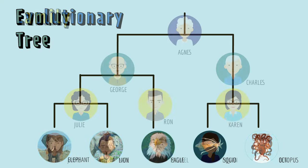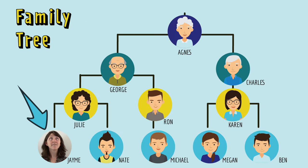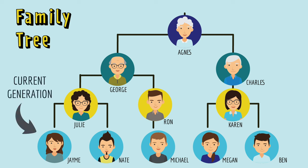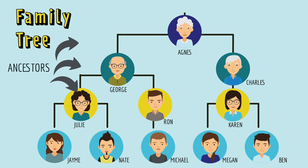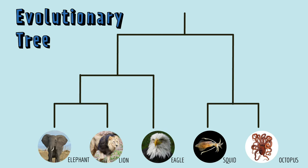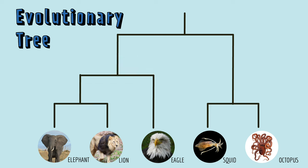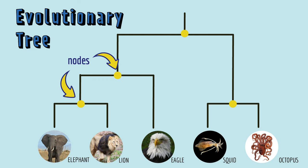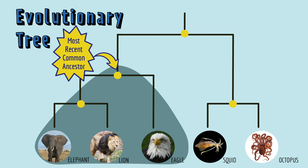An evolutionary tree is a lot like a family tree. The current generation is at the tips of the tree, down here. Ancestors are up here, farther away from the tips of the tree. One major difference between a family tree and an evolutionary tree is that we don't know who the ancestors are, since they usually aren't alive anymore. But because they gave rise to their descendants, we know they existed. The ancestors are represented by each branching point in the tree. We call those nodes. Each node represents the most recent common ancestor of all the branches coming off of it.